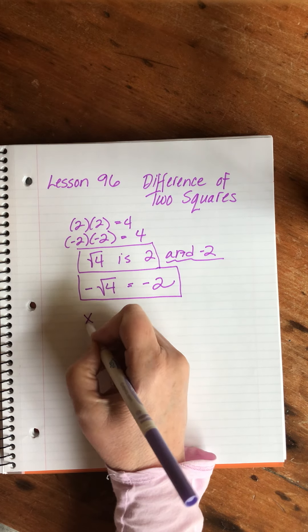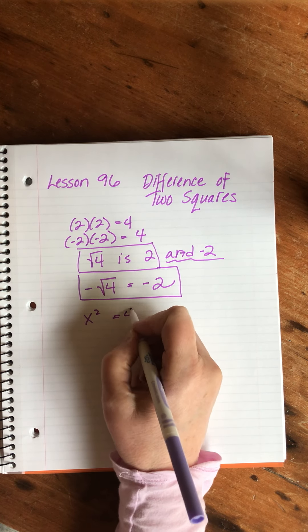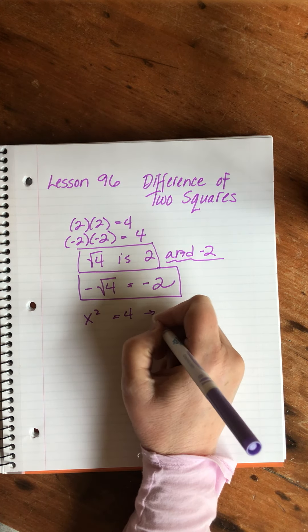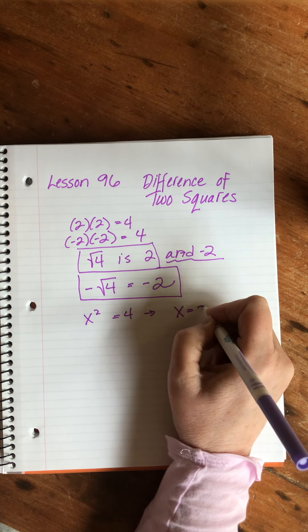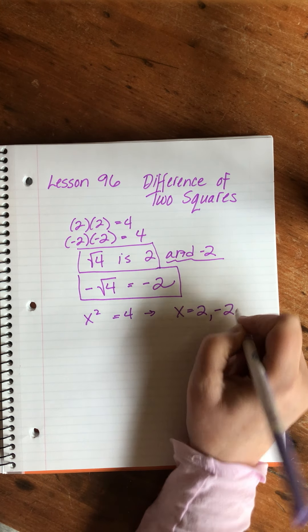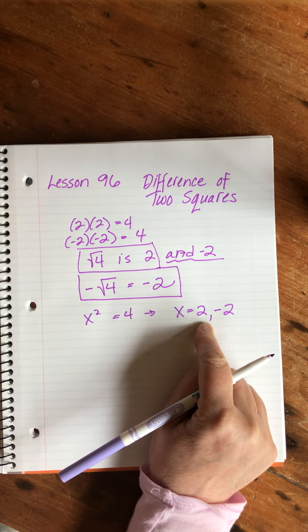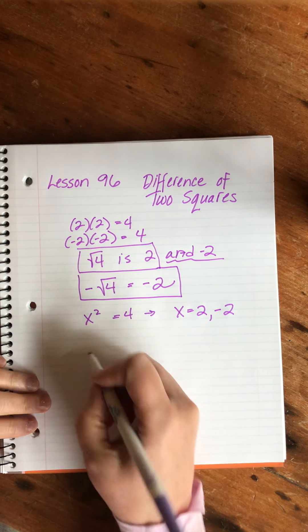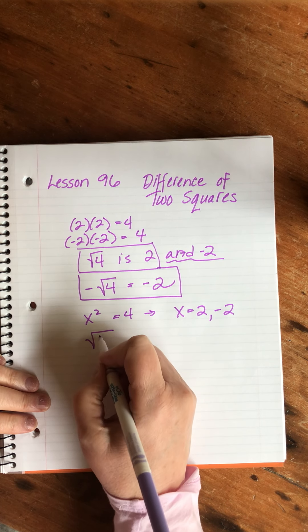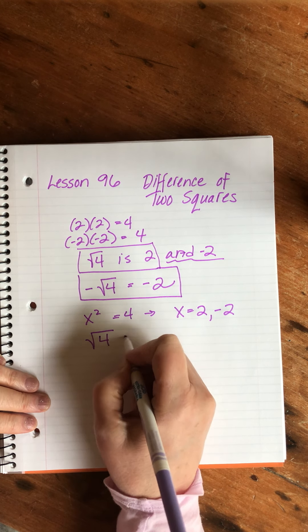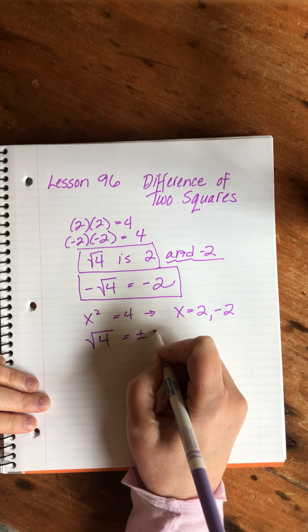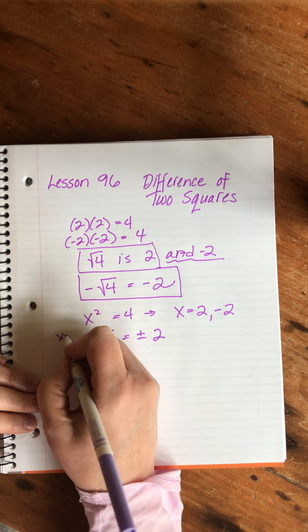But we wouldn't say that the square root of four equals plus or minus two. We just, for reasons I can't really explain logically, because I mean it is true, but we just don't note it that way.